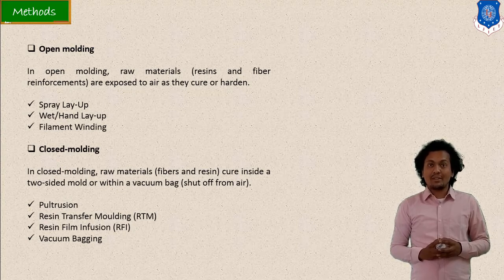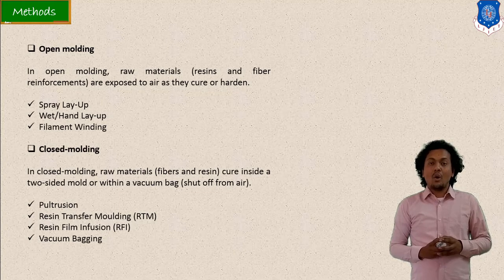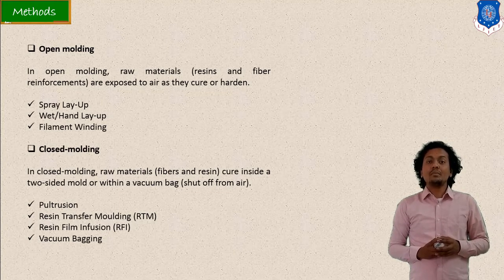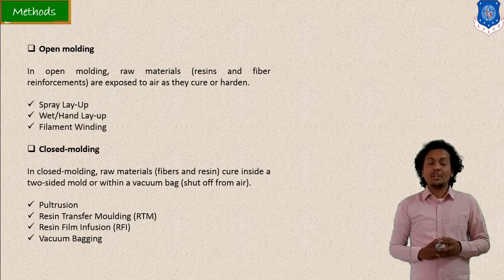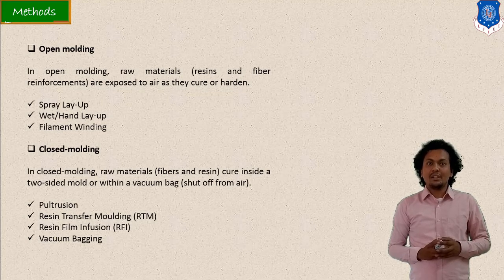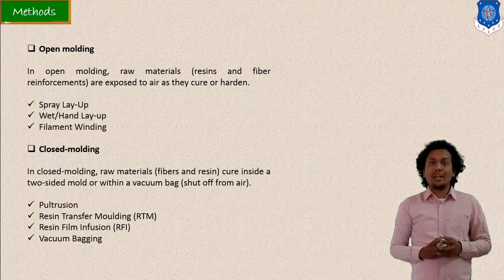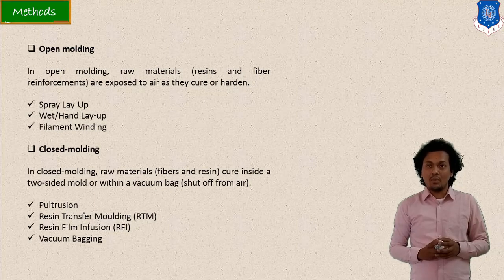These manufacturing methods are classified based on open and closed molding, or based on atmospheric conditions. In the open molding process, the mold is open to the atmosphere, meaning manufacturing is done at atmospheric pressure. In closed molding, a closed mold is provided, and there may be a pressure rise or lower pressure — for example, vacuum can be used.